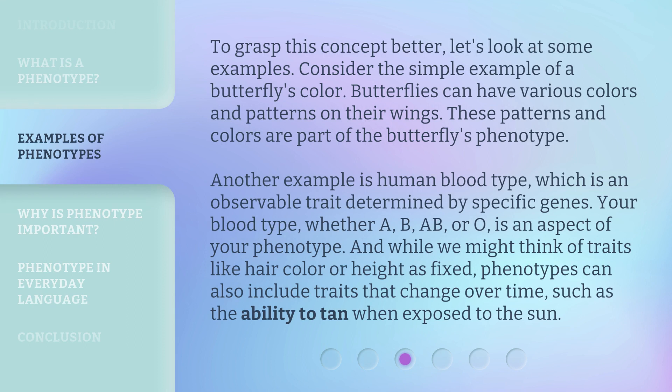To grasp this concept better, let's look at some examples. Consider the simple example of a butterfly's color — butterflies can have various colors and patterns on their wings, and these patterns and colors are part of the butterfly's phenotype. Another example is human blood type, which is an observable trait determined by specific genes. Your blood type, whether A, B, AB, or O, is an aspect of your phenotype. And while we might think of traits like hair color or height as fixed, phenotypes can also include traits that change over time, such as the ability to tan when exposed to the sun.